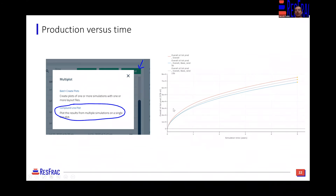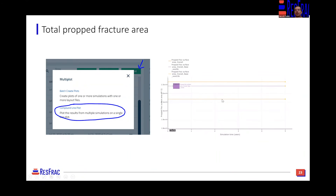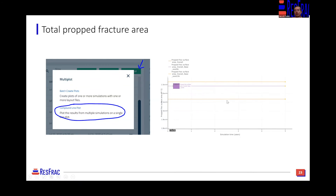Using that same functionality, another line plot you may want to compare is the total propped area or total fracture area. Here are those same three cases but with the Y-axis changed to propped fracture surface area, so I can compare whether the various cluster spacings are creating more fracture area.